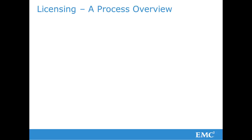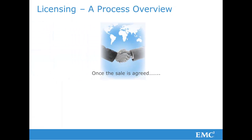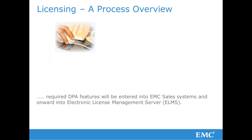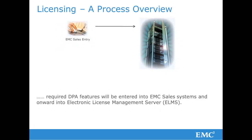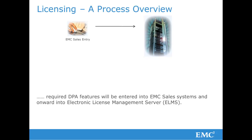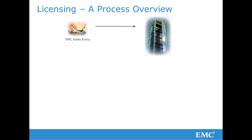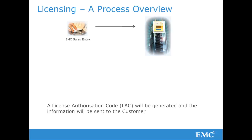Let's now take a very quick look at a simplified view of how the licensing information flows. Once the sale is agreed, EMC or Channel Partner Sales will enter the required DPA features into their respective sales systems, and these will be shared with the EMC Electronic License Management Server, or ELMS. ELMS will generate a license authorization code, which is then communicated to the customer.